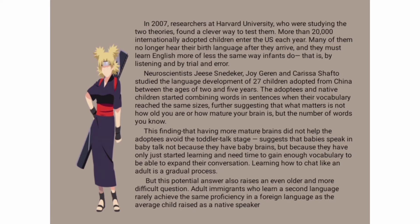This finding — that having more mature brains did not help the adopters avoid the toddler start stage, such as baby speak and baby talk — shows that children use simplified speech not because they have baby brains, but because they have only just started learning and need time to gain enough vocabulary to understand.